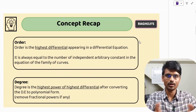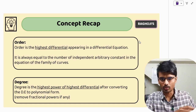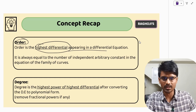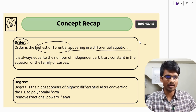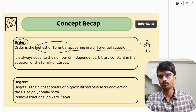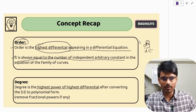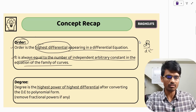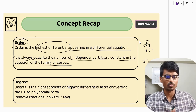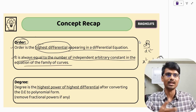You have already learned order and degree while preparing for your board exams. The order is the highest differential appearing in the differential equation. For example, if you have d²y/dx², the highest differential is 2, so the order is 2. Also, if the general equation is given, the order equals the number of independent arbitrary constants. For a family of circles x² + y² = r², there is only one constant r², so the order is 1.